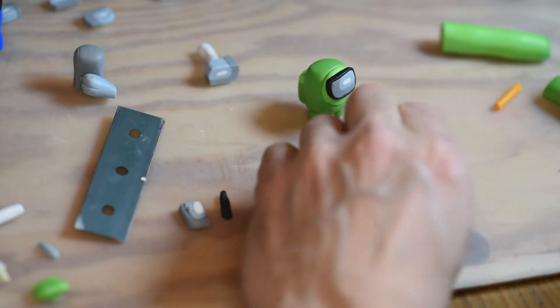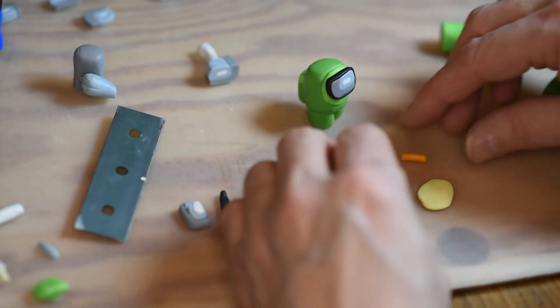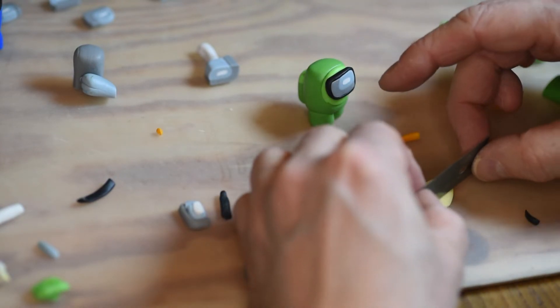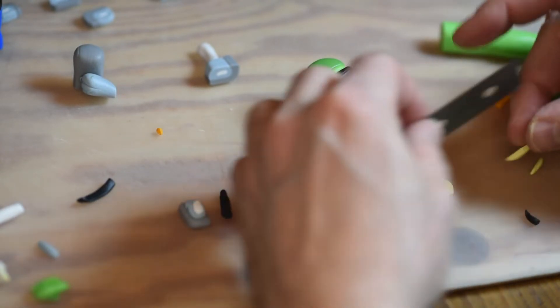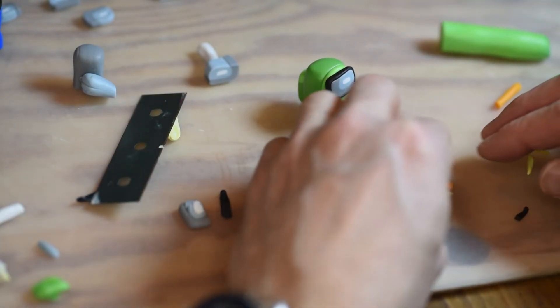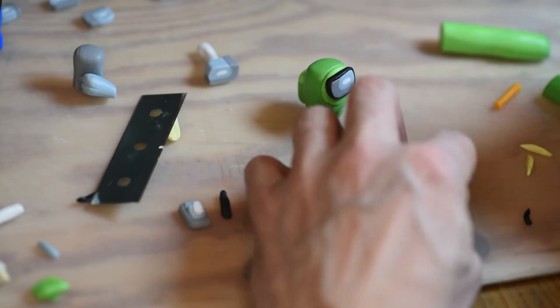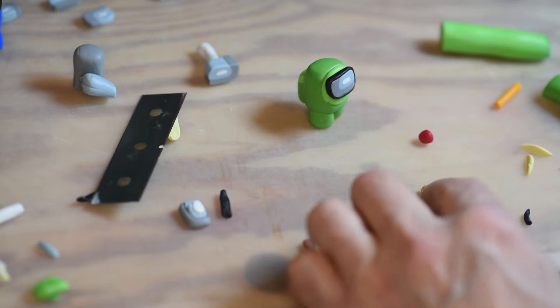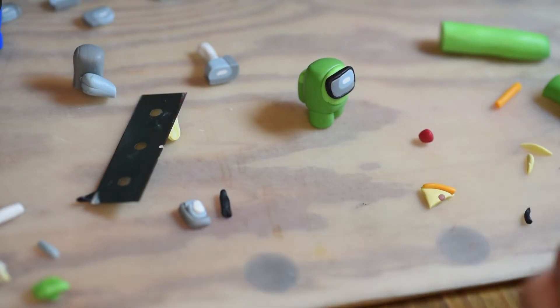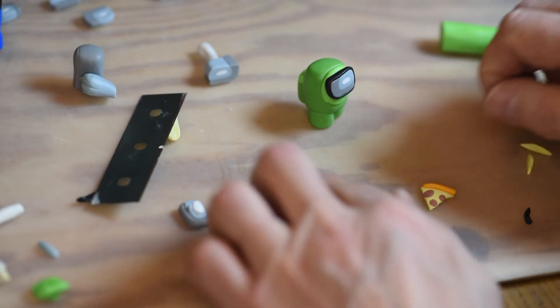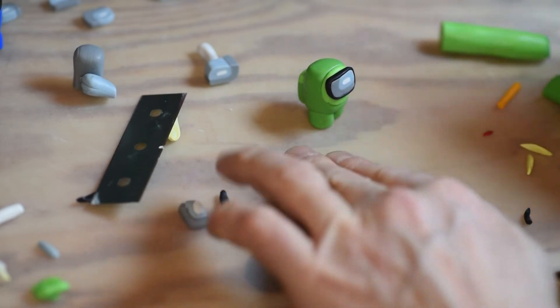The green one has a small pizza slice on his head, so let's make the pizza. Cut a triangle. I make a small orange crust and put it on the edge of the pizza, and some topping—sausage and tomatoes. Just roll them between your fingers and place them on the pizza slice.